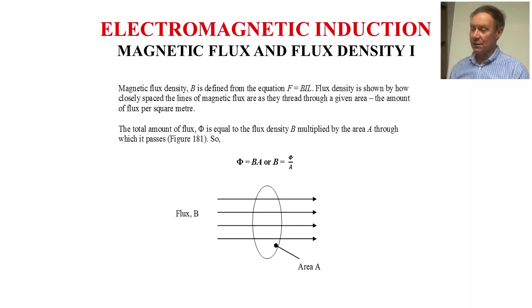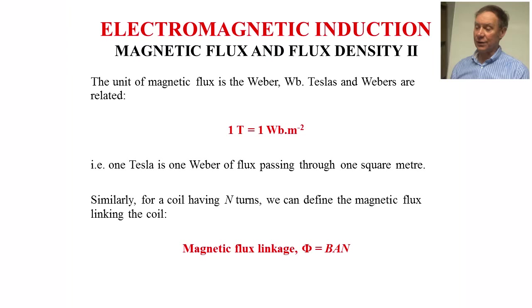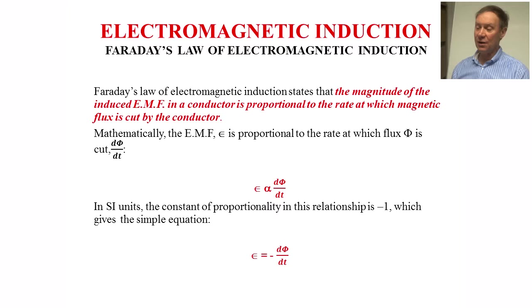The total amount of flux psi is given by the density B multiplied by the area A. So psi equals BA or B is psi over A, and there's a diagram there showing the concept. The units of magnetic flux is the Weber, WB. Teslas and Webers are related: one Tesla is one Weber per meter squared. Similarly, for a coil having N turns, we can define the magnetic flux linking the coil psi as BAN.